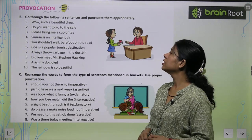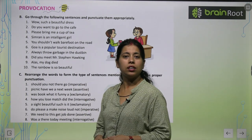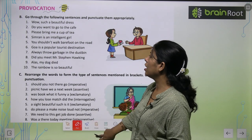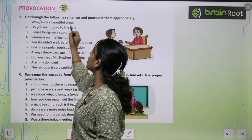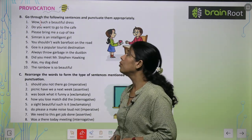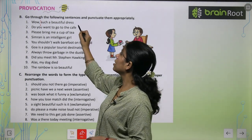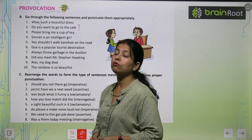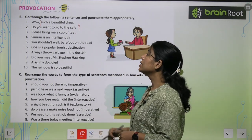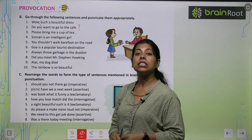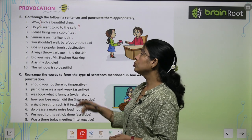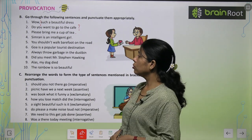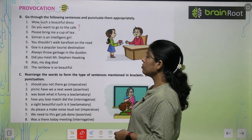Now, go through the following sentences and punctuate them appropriately. We need to add punctuation marks. For example: 'Wow, such a beautiful dress!' — a strong emotion is expressed, so it gets an exclamation mark. 'Do you want to go to the cafe?' — a question is being asked, so it gets a question mark. 'Please bring me a cup of tea.' — imperative, full stop. 'Samran is an intelligent girl.' — full stop. 'You shouldn't walk barefoot on the road.' — full stop.